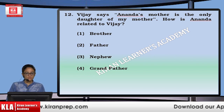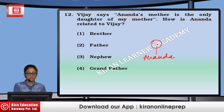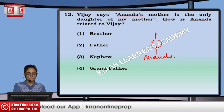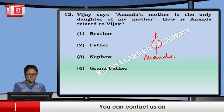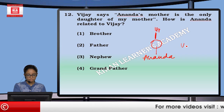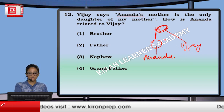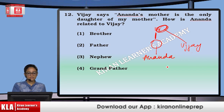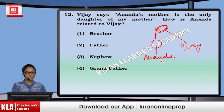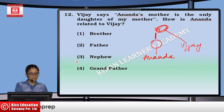Next: Vijay says Ananda's mother is the only daughter of my mother. She is the only daughter of Vijay's mother, that means my mother. How is Ananda related to Vijay? Sister's daughter — sister's son or daughter is nephew. The option will be third.